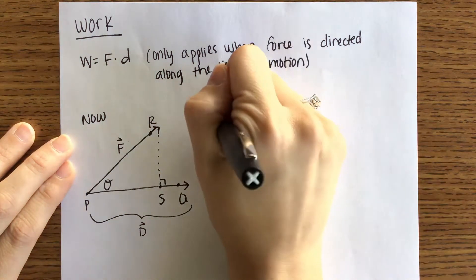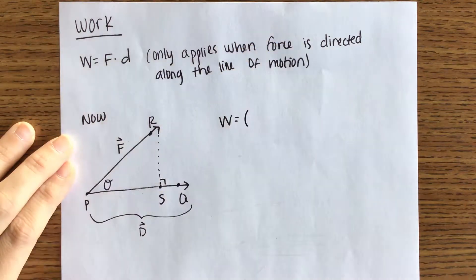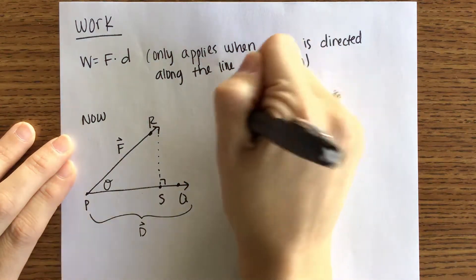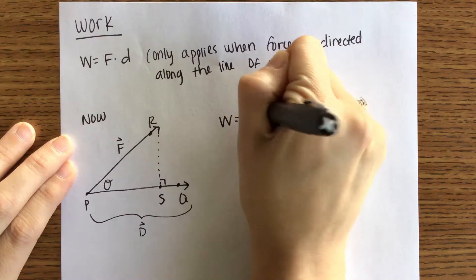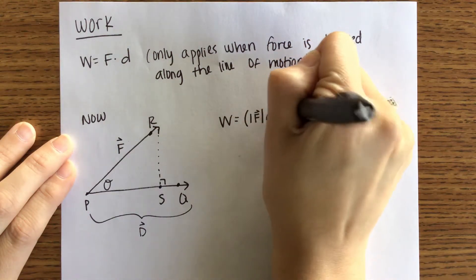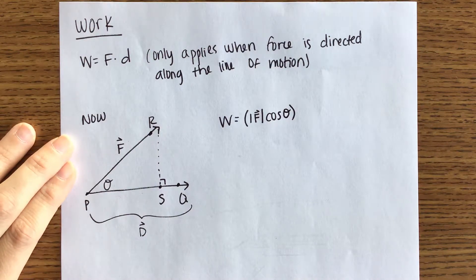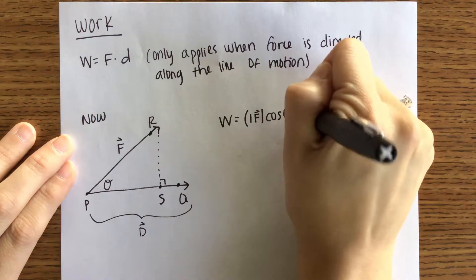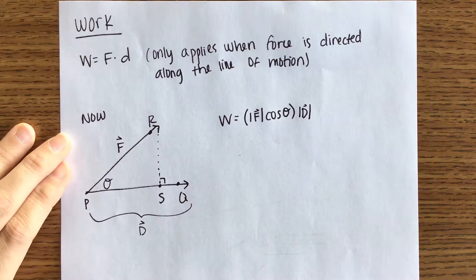Work, then, is going to be the magnitude of the force times the cosine of theta multiplied by the magnitude of D. D being the displacement.